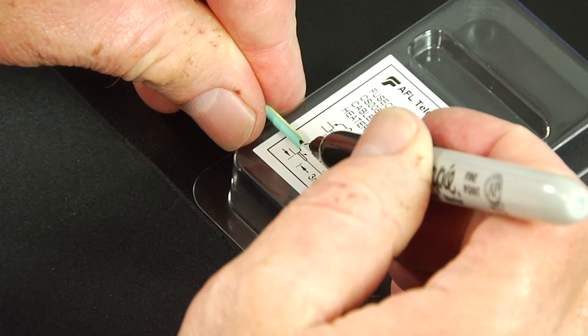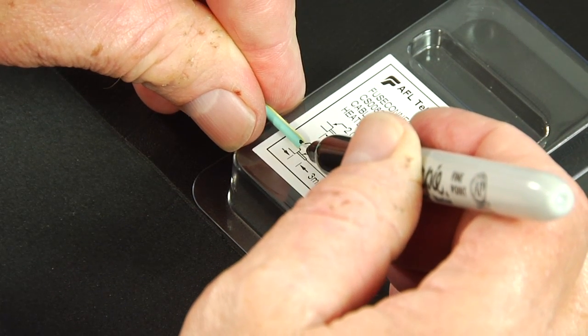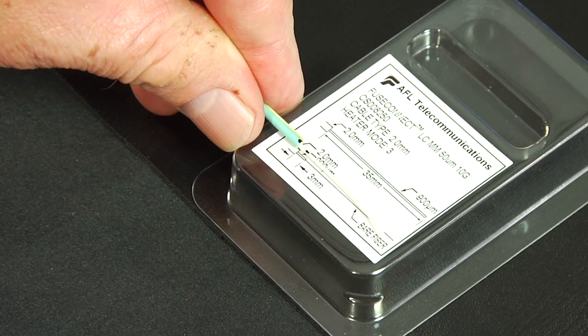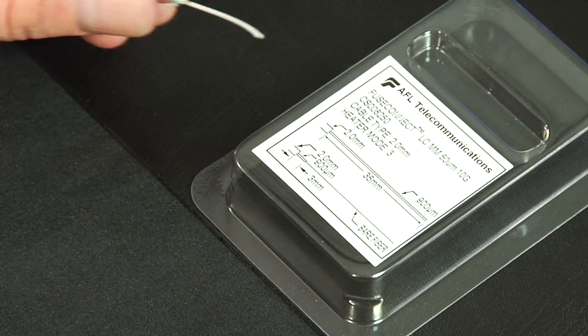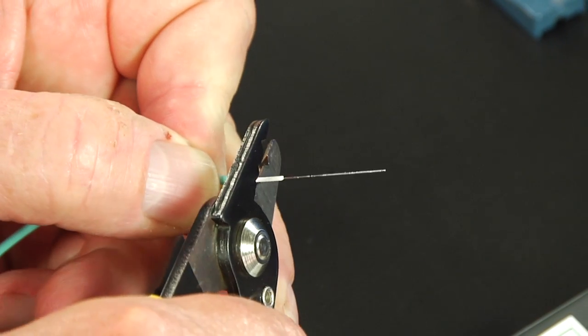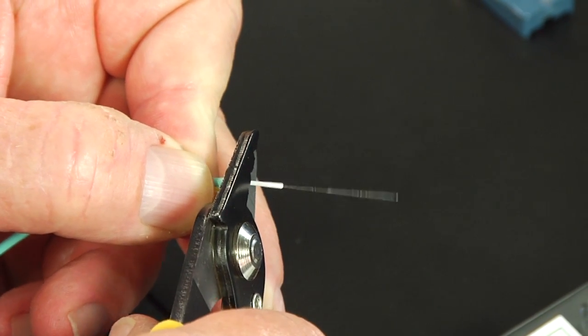Refer to the strip template on the package cover and mark the 900 micron fiber at 32 millimeters from the end of the fiber. Strip 32 millimeters of 900 micron coating from the end of the fiber.